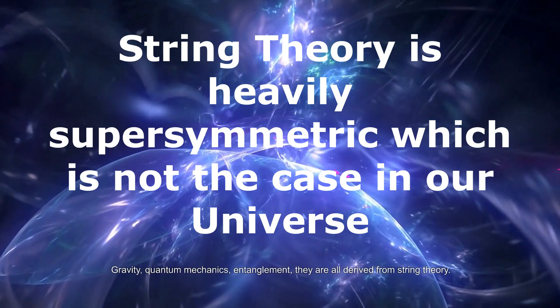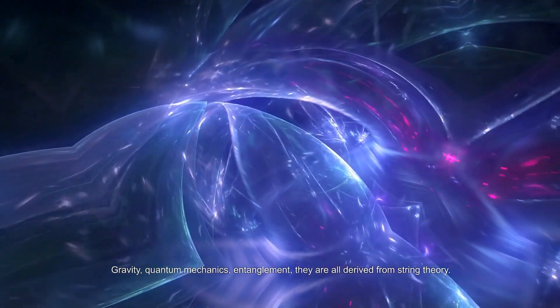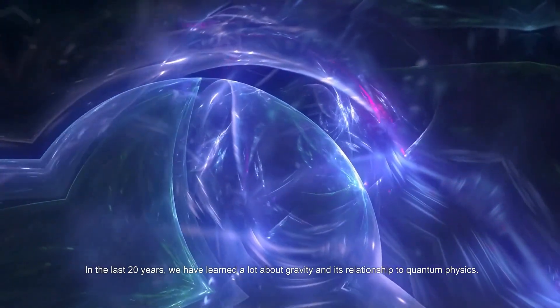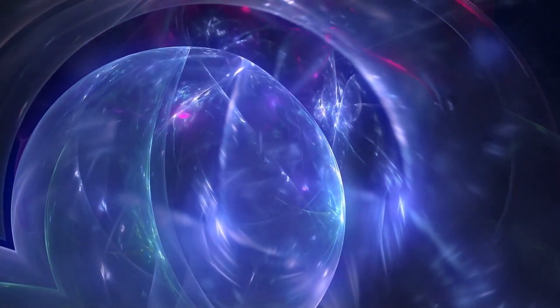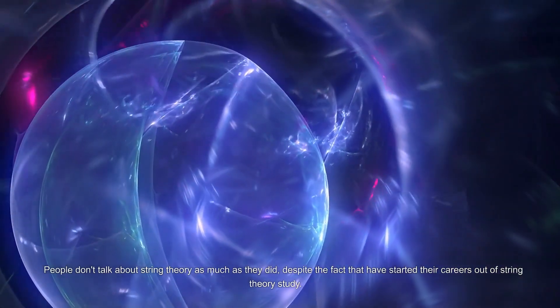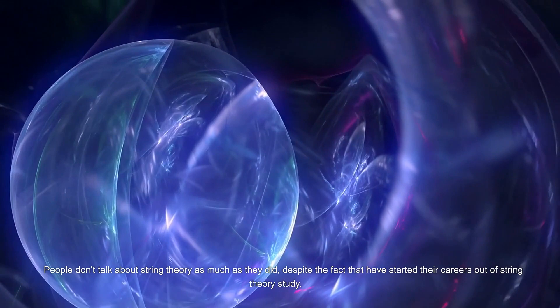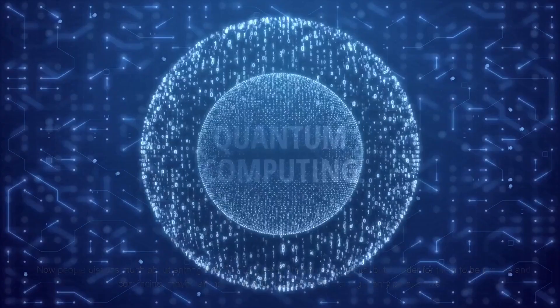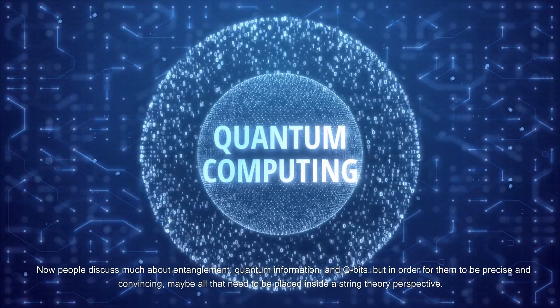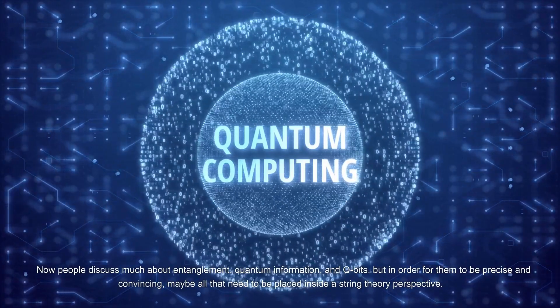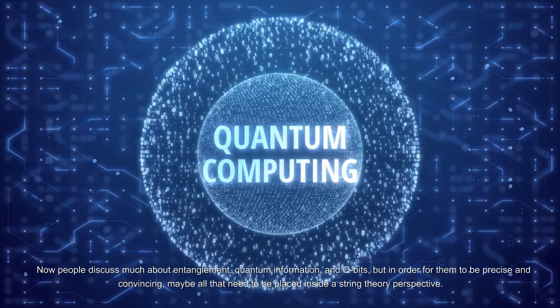Gravity, quantum mechanics, entanglement—they are all derived from string theory. In the last 20 years, we have learned a lot about gravity and its relationship to quantum physics. People don't talk about string theory as much as they did, despite the fact that many have started their careers out of string theory study. Now people discuss much about entanglement, quantum information, and qubits, but in order for them to be precise and convincing, maybe all that needs to be placed inside a string theory perspective.